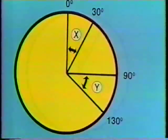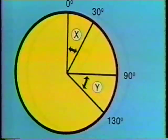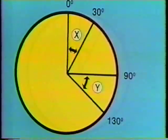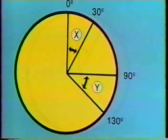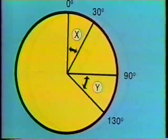Why is the larger angle? Because from 90 to 130 degrees is an angular distance of 40 degrees, compared to only 30 degrees of angle X.